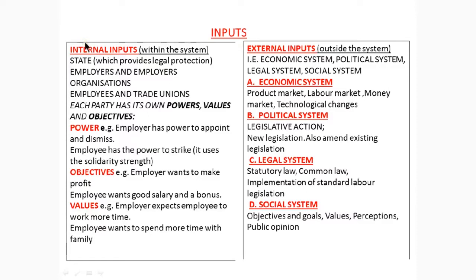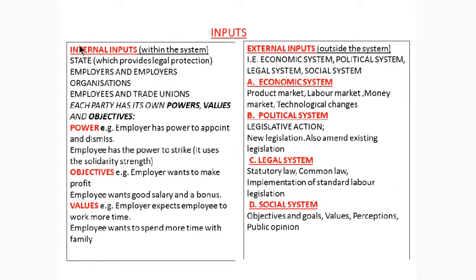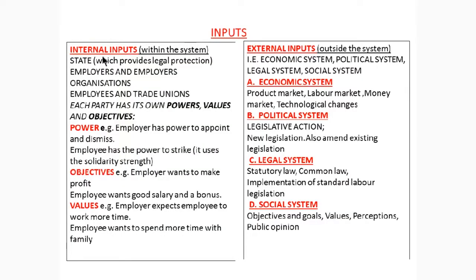If we paraphrase the issue of inputs more, the inputs are divided into two. We have internal inputs, which are within the system — within the relationship between the employer and employee. The state provides legal protection, for example the constitution, the Basic Conditions of Employment Act, and all the pieces of legislation for the purpose of protecting both parties. The second internal input is employers and employers' organizations, who provide the supply of labor to the employee and have a right to hire, to dismiss, and to retrench.